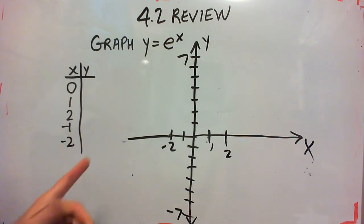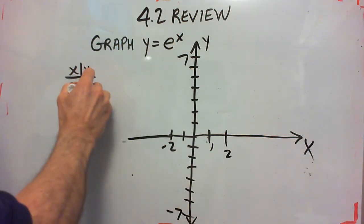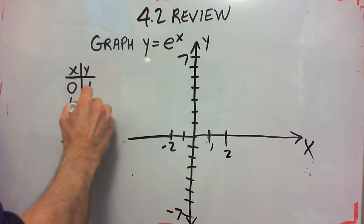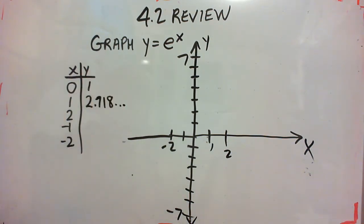To find these values, e to the 0, anything to the 0 is 1. e to the 1 is e itself, which is 2.718 and it goes on and on. If that's new to you, you should go back to the notes and read about e.